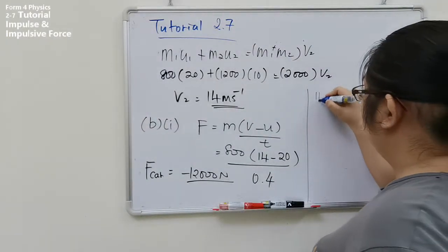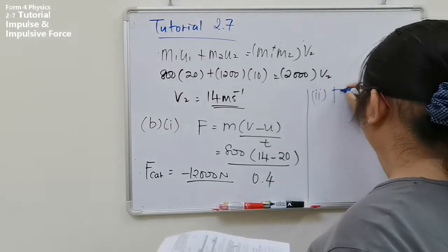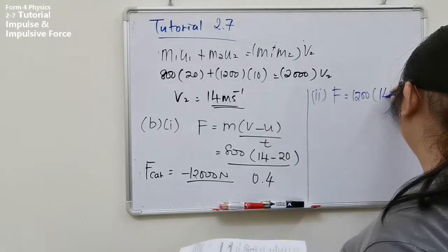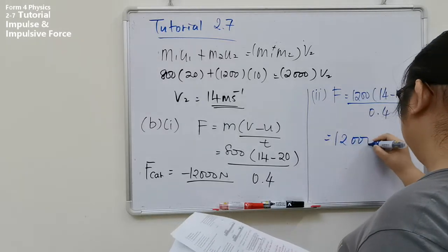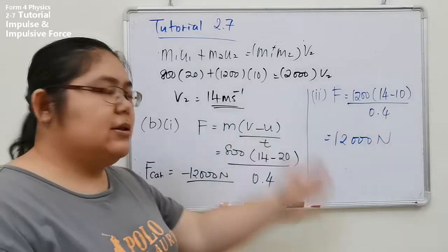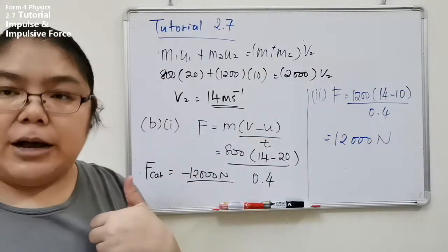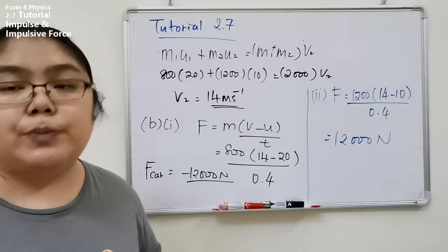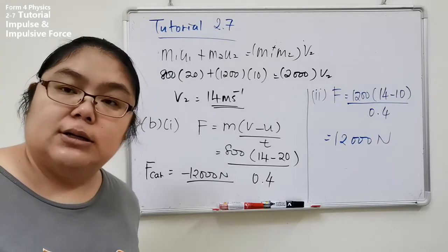Now the opposite — number two is the force acting on the truck by the car. So we calculate the truck. The truck mass is 1200 kg. The truck's initial velocity is 10 m/s, final velocity becomes 14 m/s — meaning it goes faster. Time taken is still 0.4 seconds. The answer is 12,000 Newtons. One goes negative and one is positive, meaning the forces acting on the truck and the car are the same magnitude, just in opposite directions.